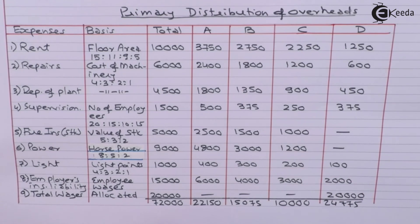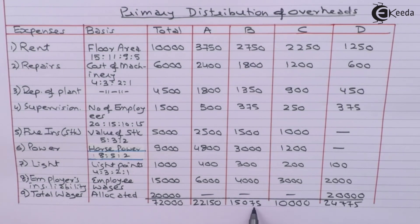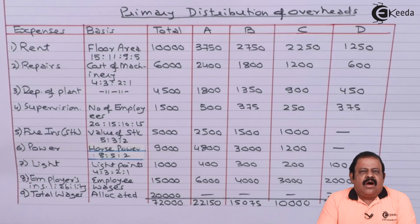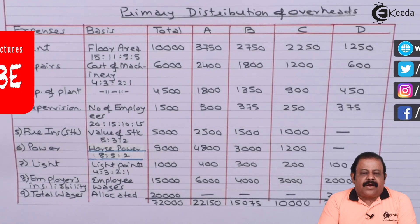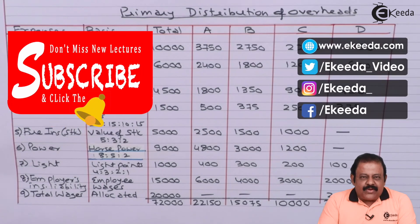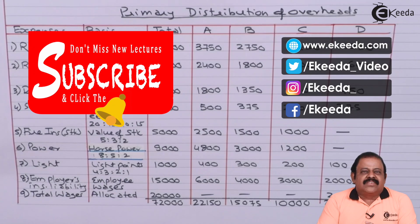The share of overheads is: Department A — 22,150; Department B — 15,075; Department C — 10,000; and Department D — 24,775. In this question we have learned how to allocate overheads between three production departments and one service department. Thanks for watching this video. Stay tuned with Ikeda and subscribe to our channel.